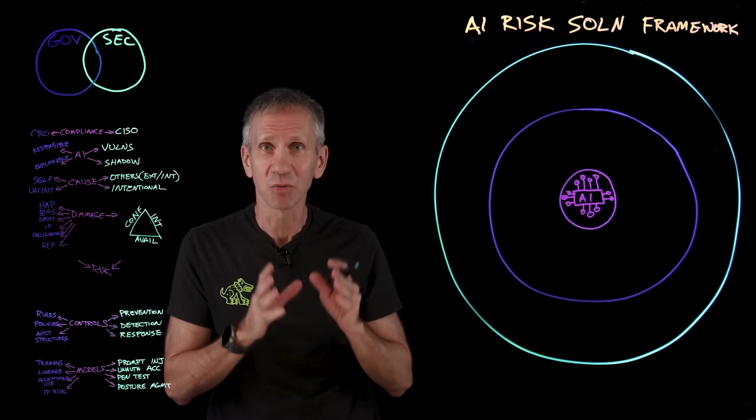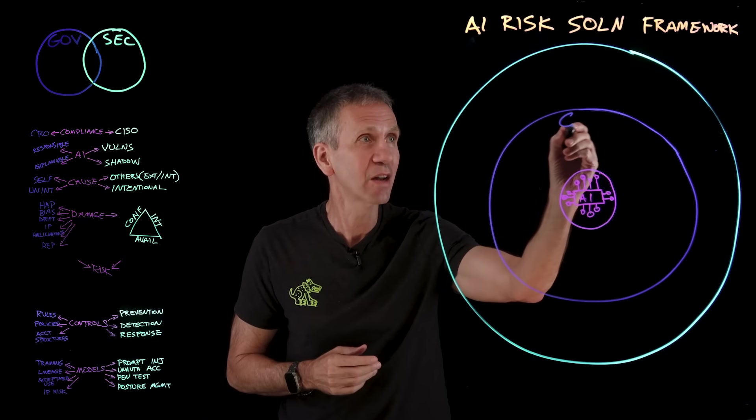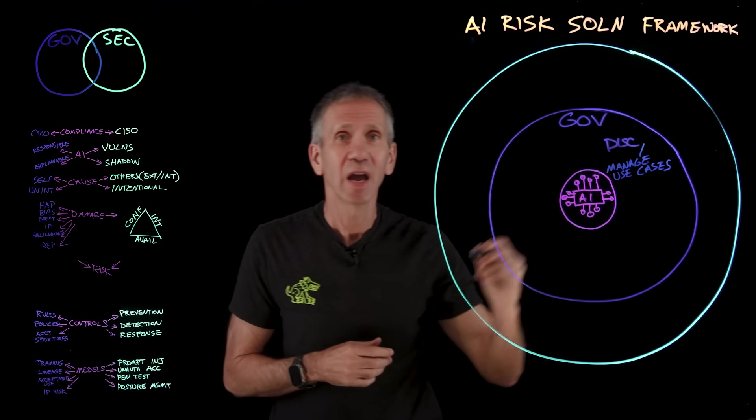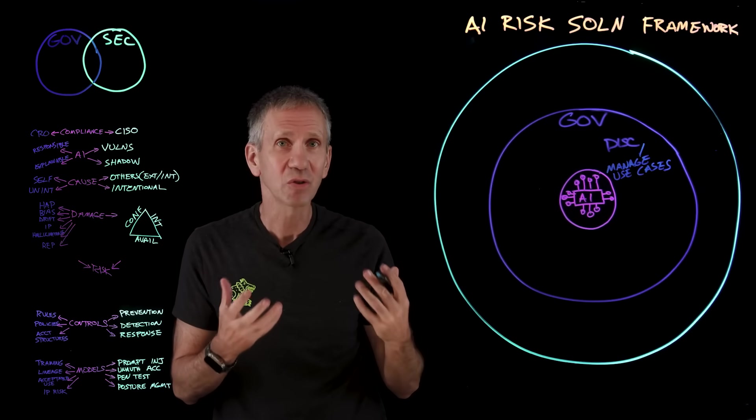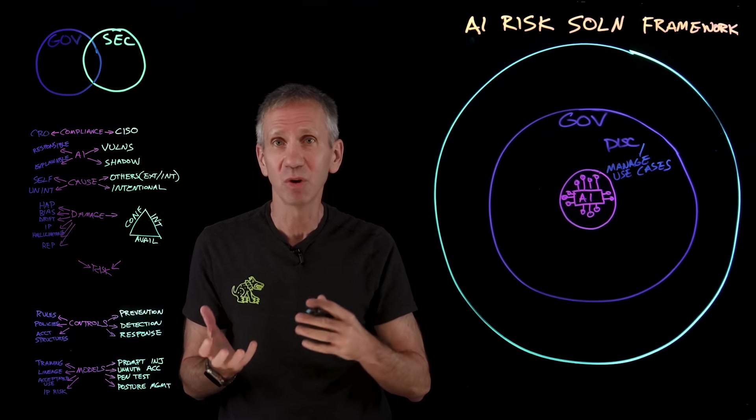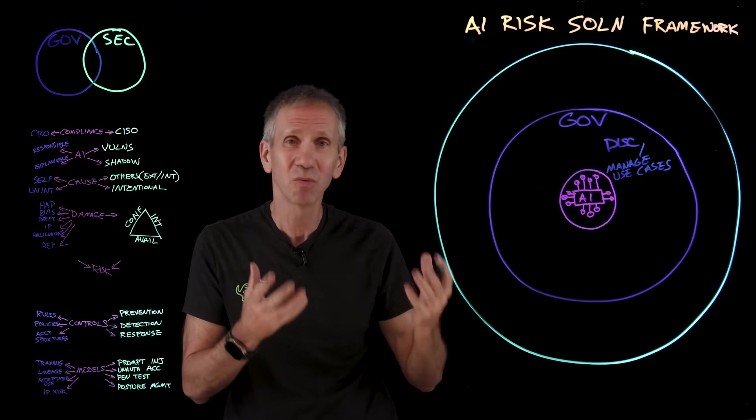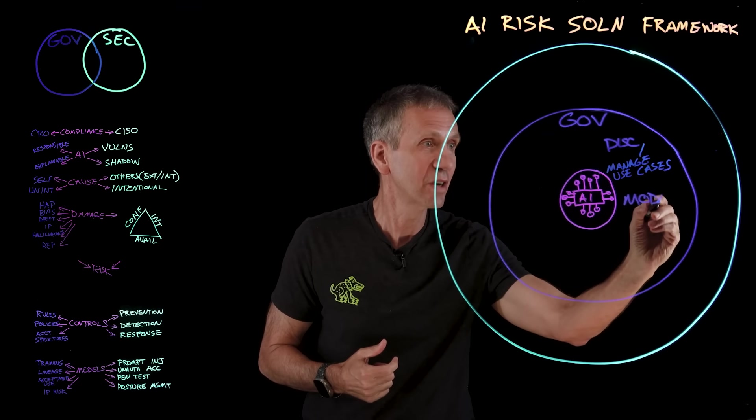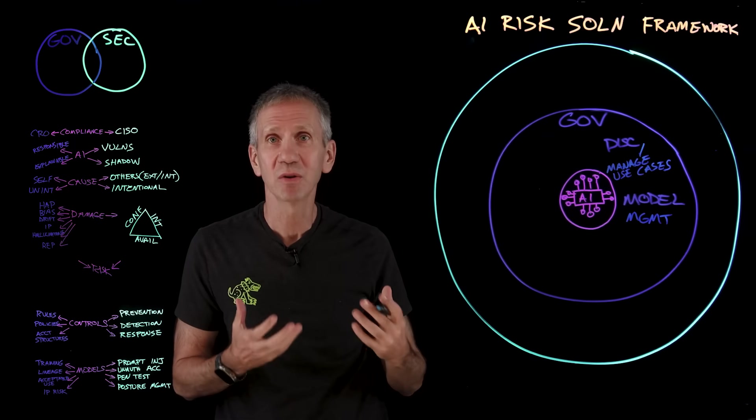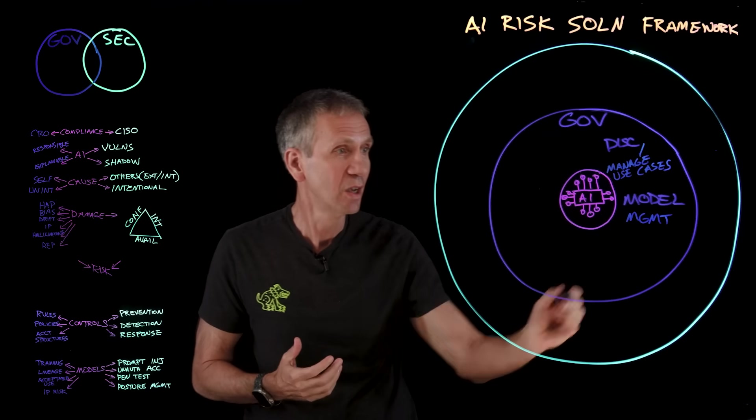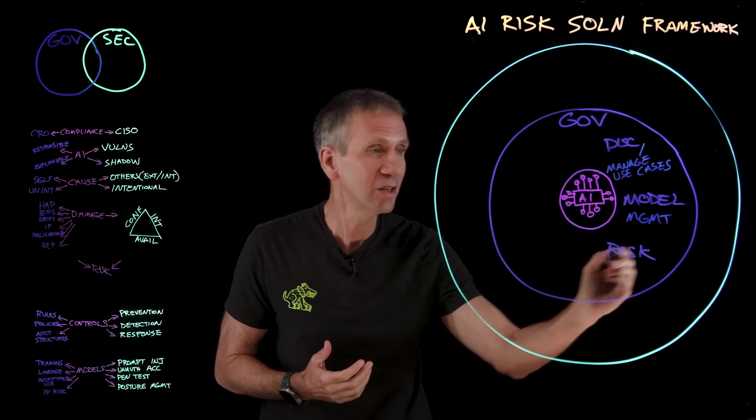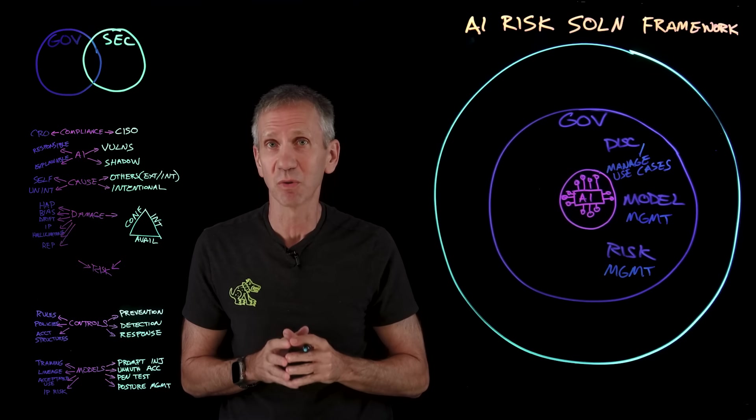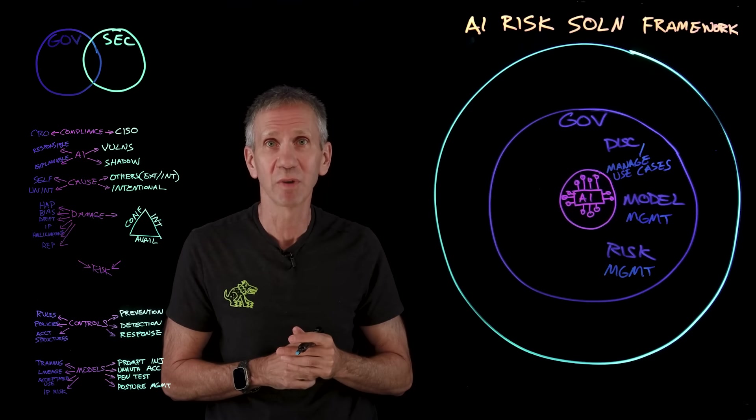At the center is our AI that we're trying to protect. Then a ring around that of protection, that's our governance layer. I'm going to do discovery and management of AI use cases. I need to be able to do model management. So I've got a whole bunch of models. How do I make sure that they're doing what I intend? I need to do risk management. I need to be able to figure out what the risks are, quantify them to the extent possible.